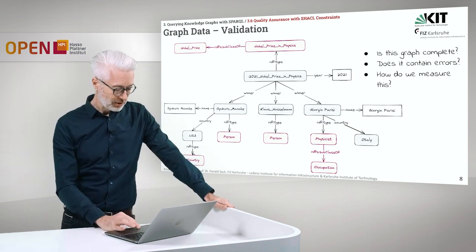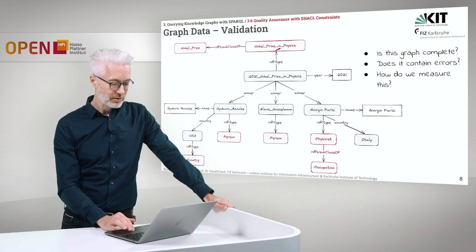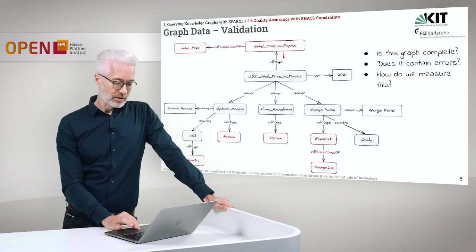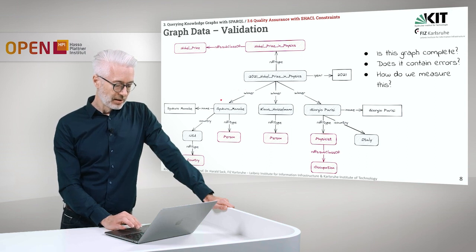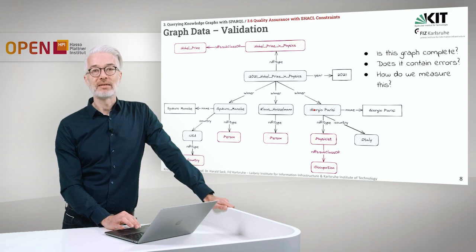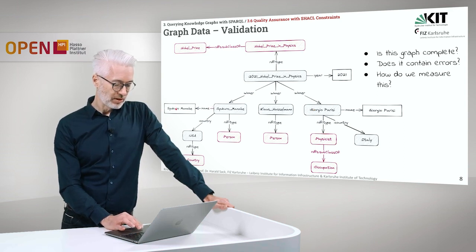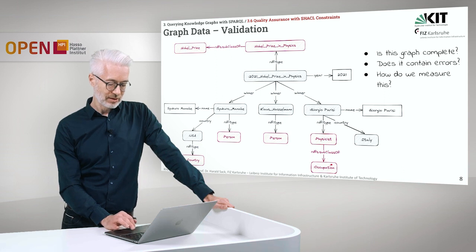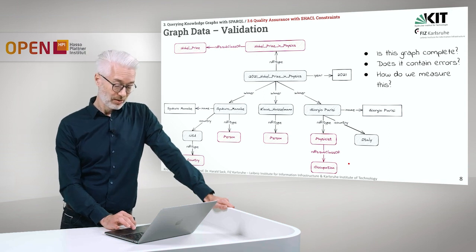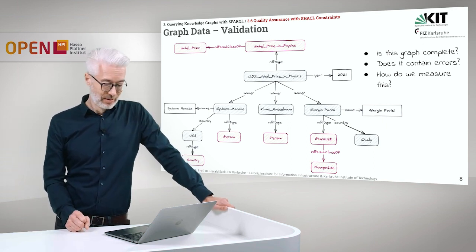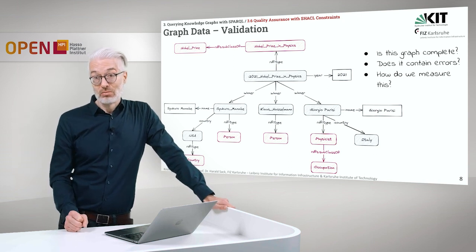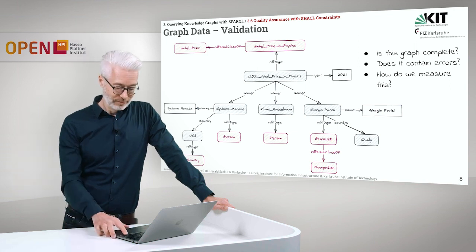I have here a small graph prepared for you. This is about the Nobel Prize in Physics, specifically the Nobel Prize in Physics from 2021. We have three winners: Syukuro Manabe, Klaus Hasselmann, and Giorgio Parisi. For some of them we have a name, a country given, and we have that they are persons. Giorgio Parisi here is listed as a physicist, and physicist is of course a subclass of occupation. That is already a hint that something might not be the way we like it. The main question is: is this graph complete, does it contain errors, and how would we measure that?